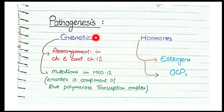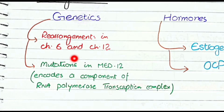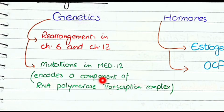Let's discuss the pathogenesis of leiomyomas. Leiomyomas are caused by interaction between genetics and hormones. As far as genetics is concerned, the common disturbances are rearrangements in chromosome 6 and 12, and mutations in MED12, which is the gene that encodes a component of the RNA polymerase transcription complex. So remember these two: rearrangements in chromosome 6 and chromosome 12, and mutations in MED12.